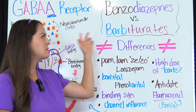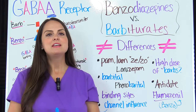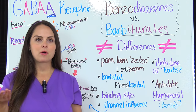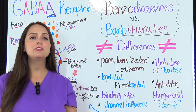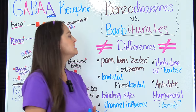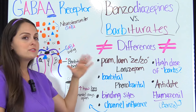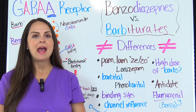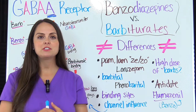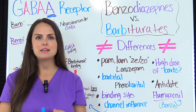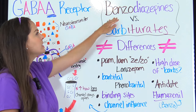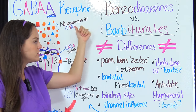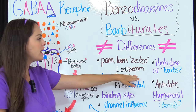Now let's look at the differences between benzodiazepines and barbiturates. As a nurse, how do you tell if a medication is a barbiturate or a benzodiazepine? You want to look at the generic name. For benzodiazepines, most generic names tend to end in -pam or -lam, and if you look in the middle of the generic name, most will have a -ze- or -zo-. Look at the word benzodiazepine — you have a -zo- and a -ze-. One generic drug that follows that rule is lorazepam.